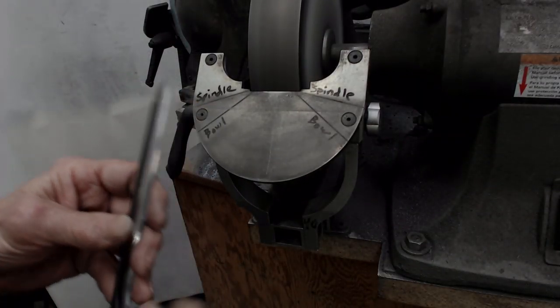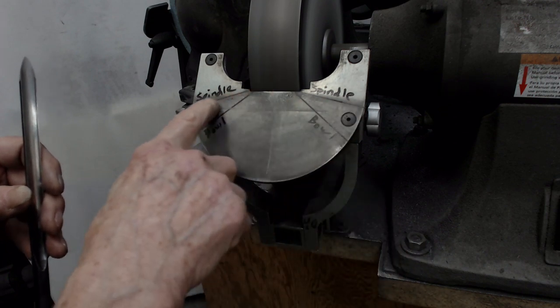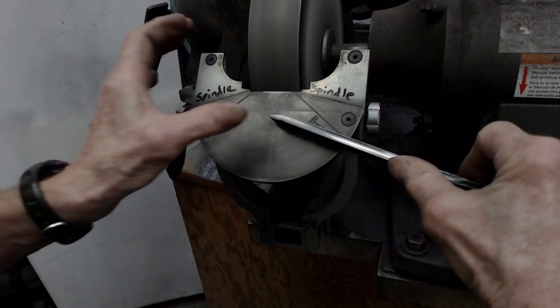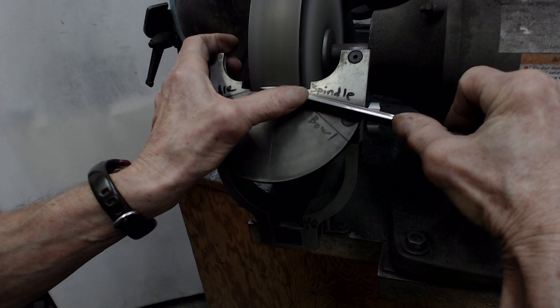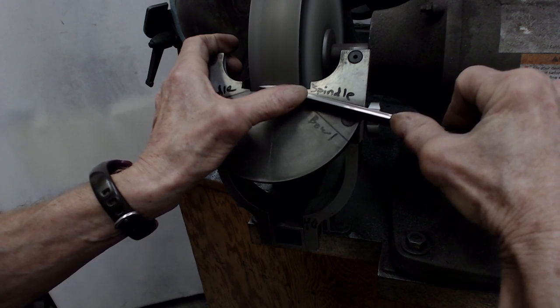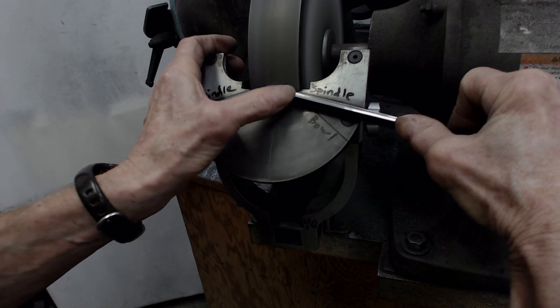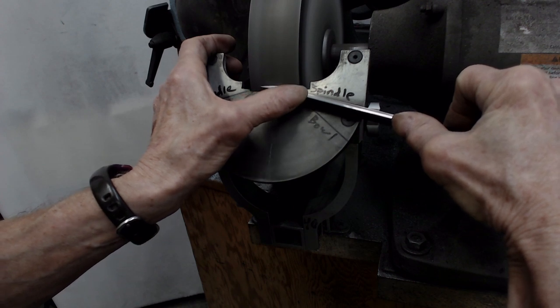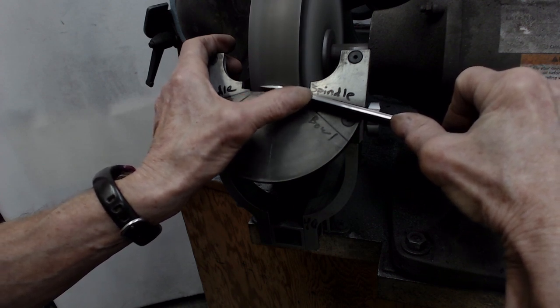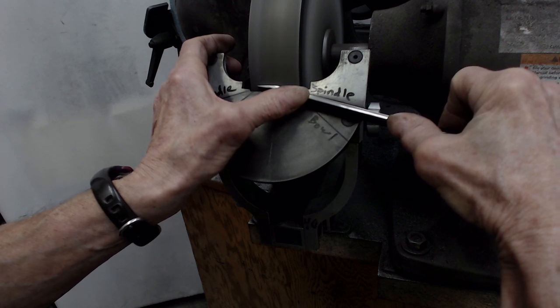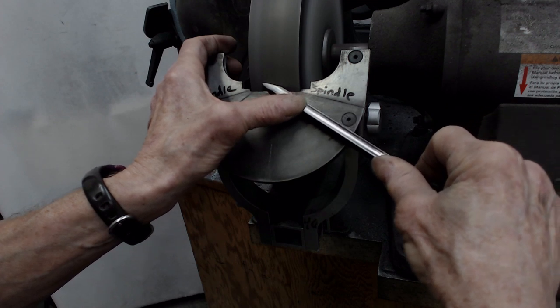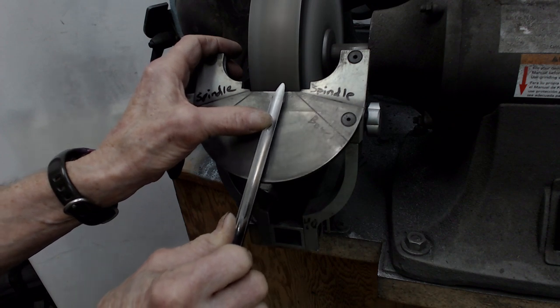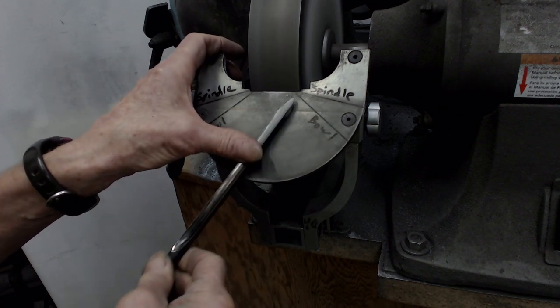For the spindle gouge I've got some lines drawn on the platform for the sweep angle here too. I'm going to put the tool on the platform aligned with the sweep angle. The amount that I roll the tool is just enough to have the flute facing up. Contact the wheel at the extreme wing angle and in a continuous motion roll the flute open and swing the handle to center and a little bit past to blend the wing with the tip.